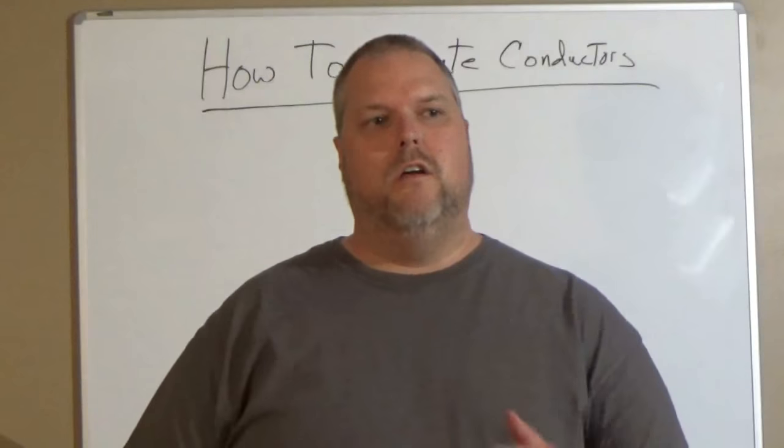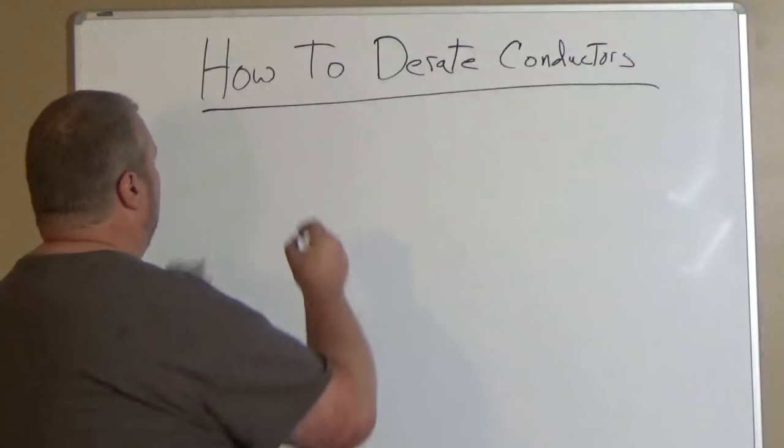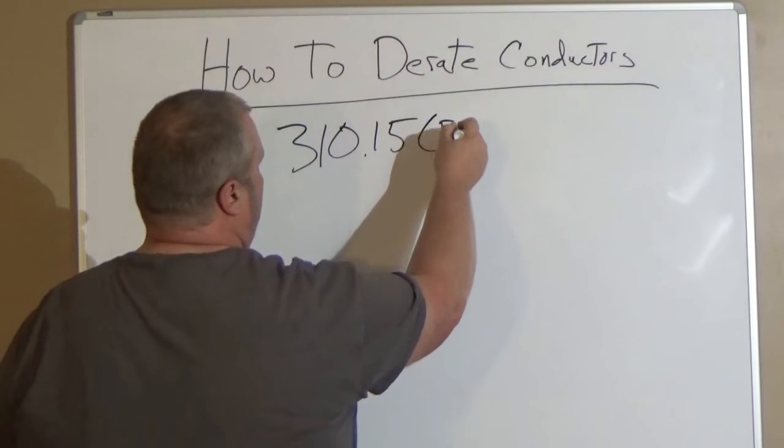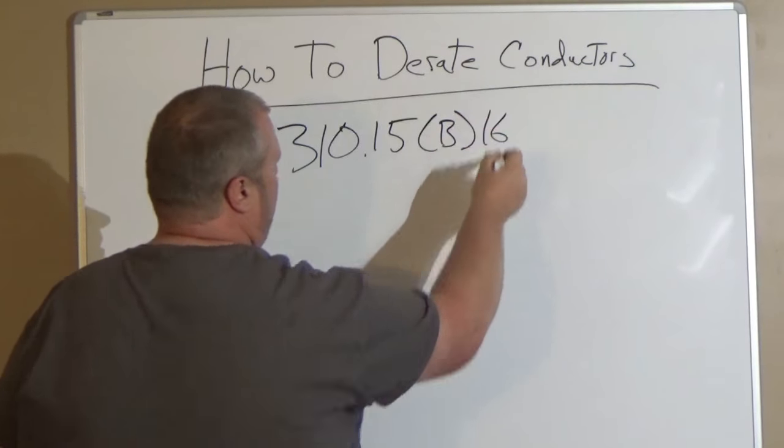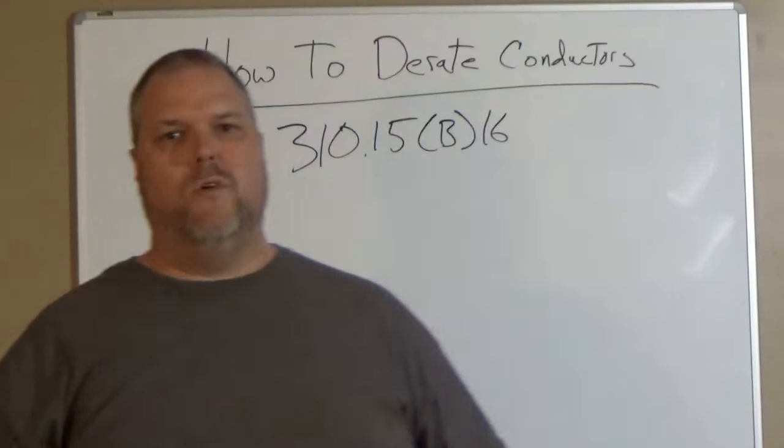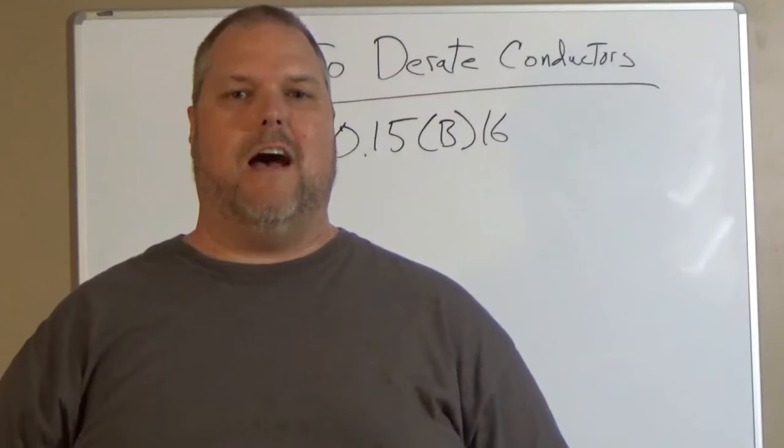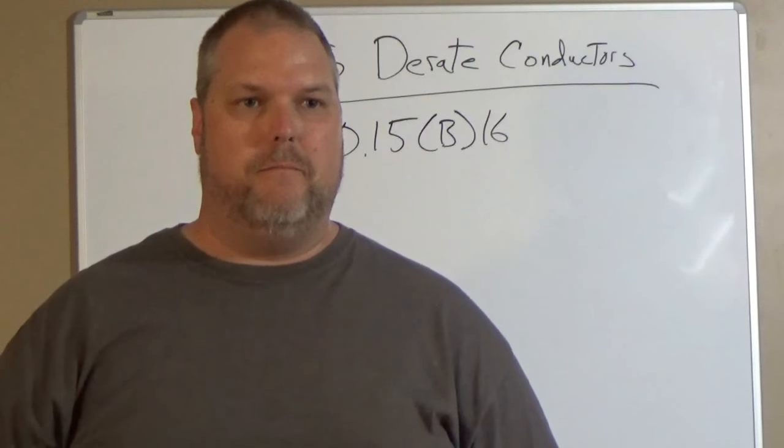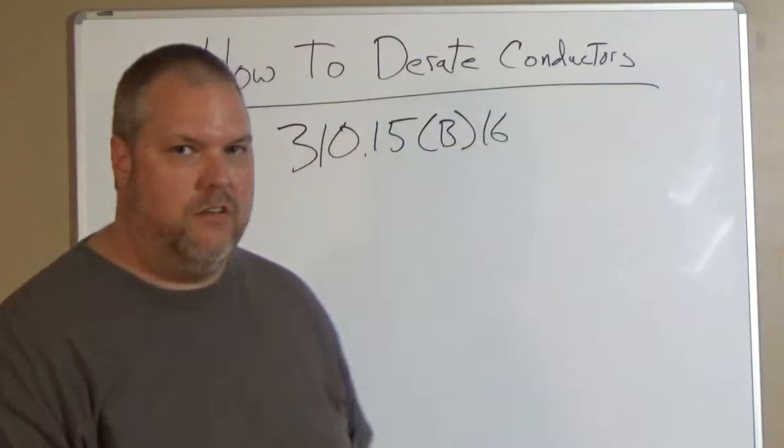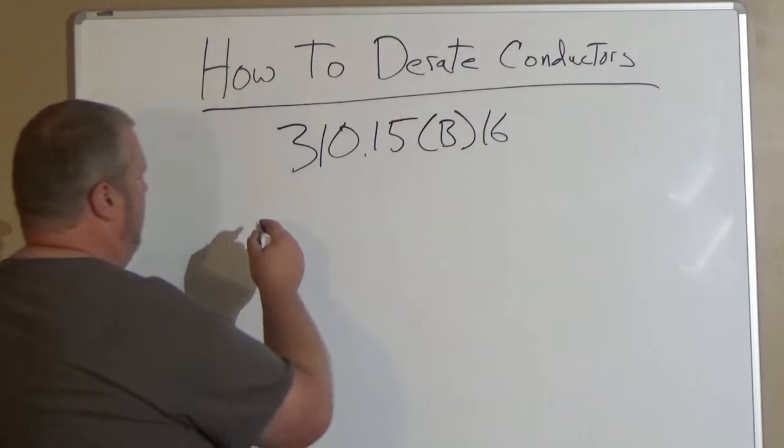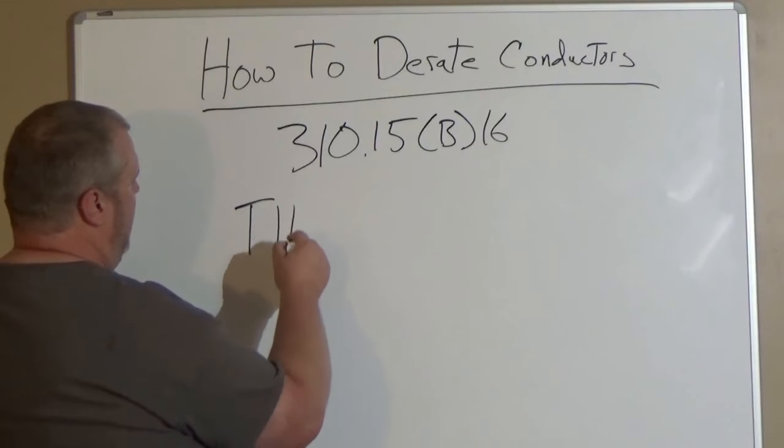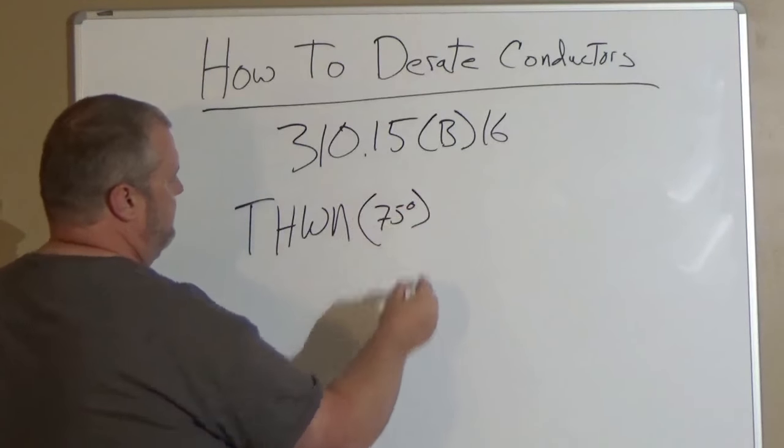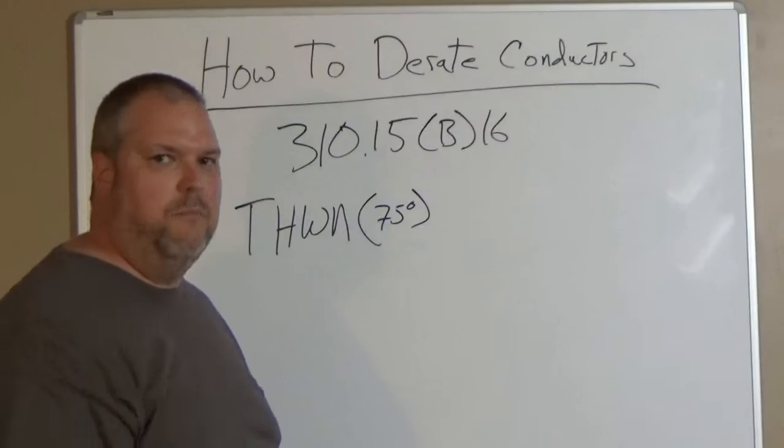So what do we do? We go to 310.15.B.16, and we're going to be looking for a size THWN, which you'll find in the 75-degree column. We're going to look for a number 8. So let's do this, we're going to write on the board: THWN, it's going to be in the 75-degree column, and we're going to size a number 8 conductor.